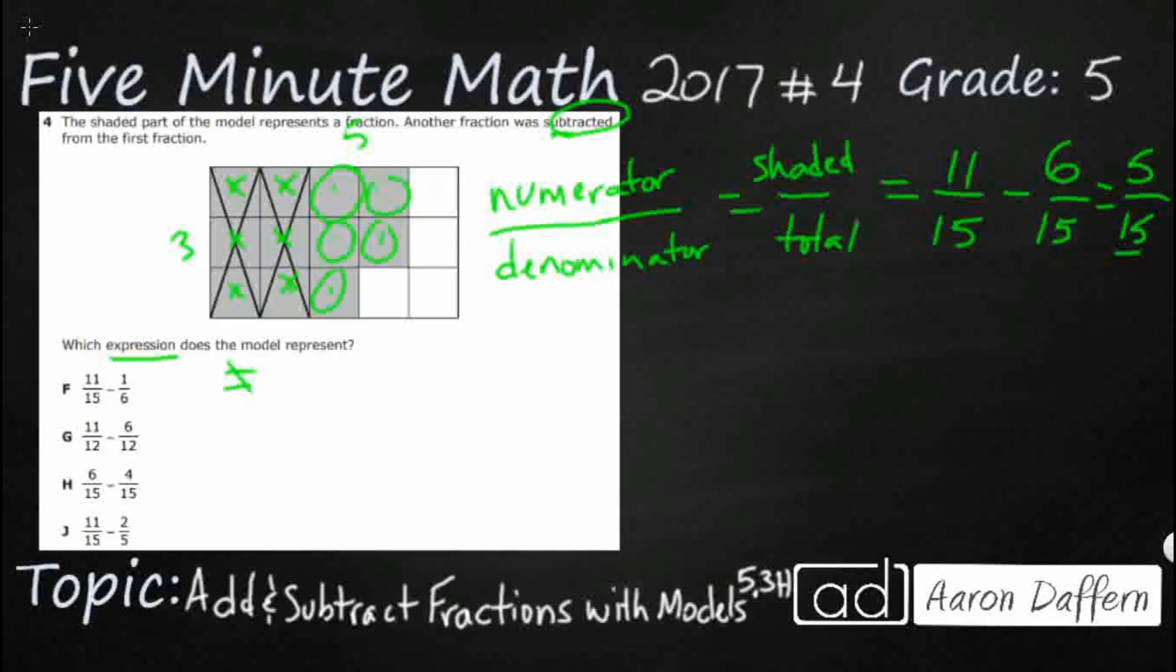So I'll give you a hint. The problem is with this term right here. We need to view that term differently. It is going to be eleven fifteenths so we are good with that. But how can we visualize our six fifteenths differently?